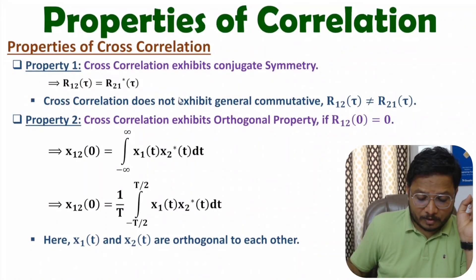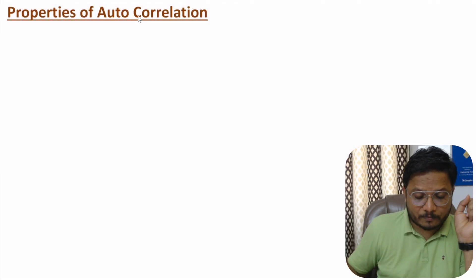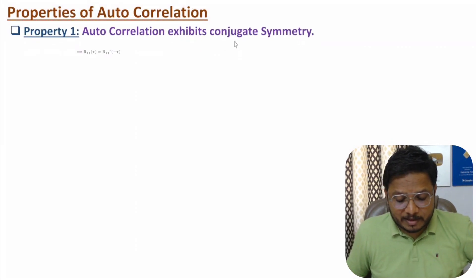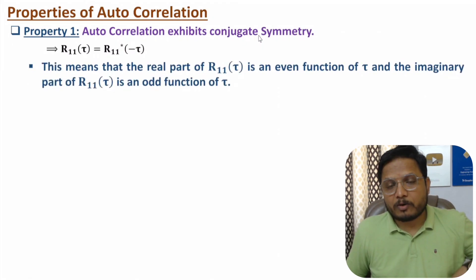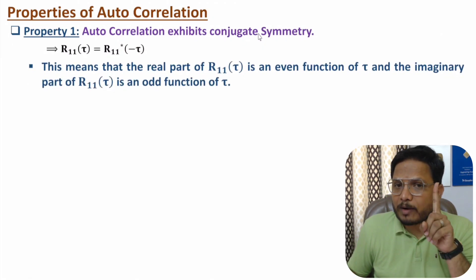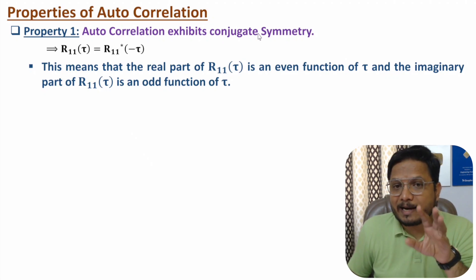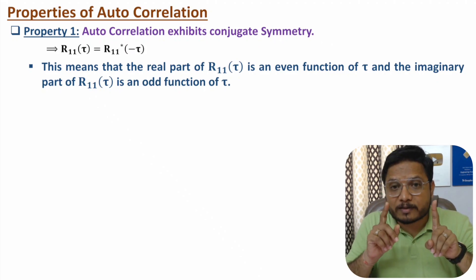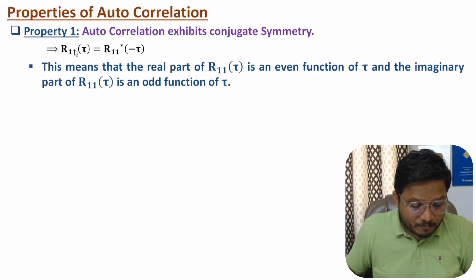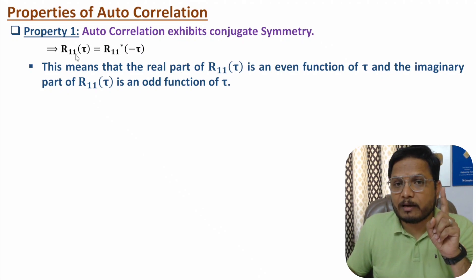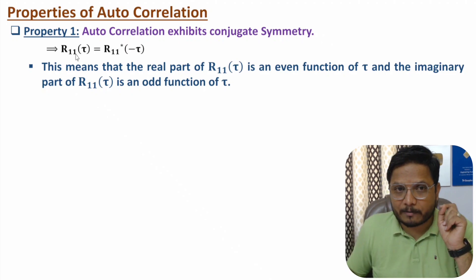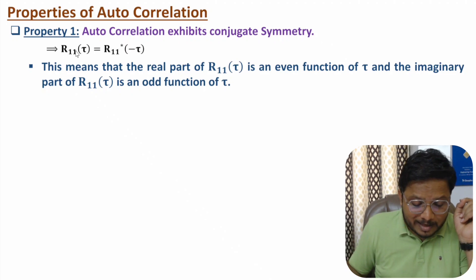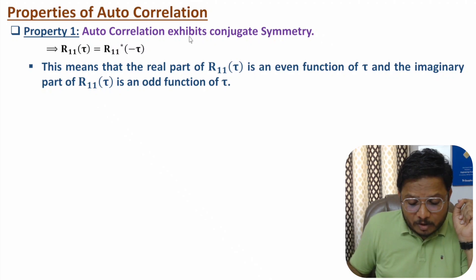Now let me discuss properties of auto correlation. The first property is based on conjugate symmetry. Auto correlation is performed with one signal only — we identify similarities between a signal and its time-shifted version. In notation, I have used '1,1' meaning auto correlation with signal 1 only. R₁₁(τ) equals R₁₁(−τ) conjugate, so auto correlation exhibits conjugate symmetry.